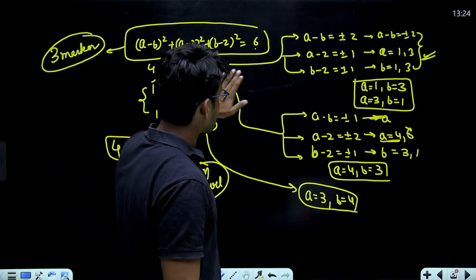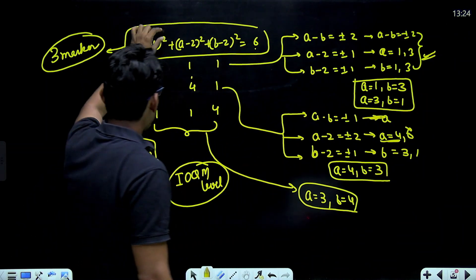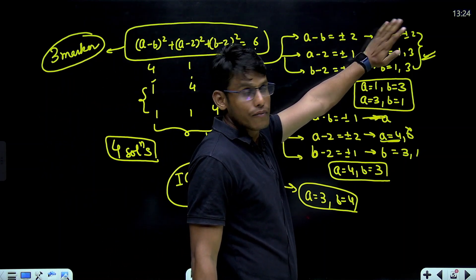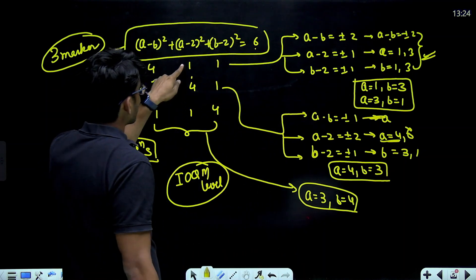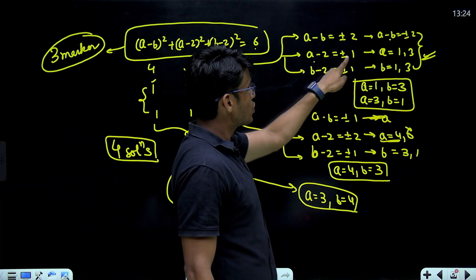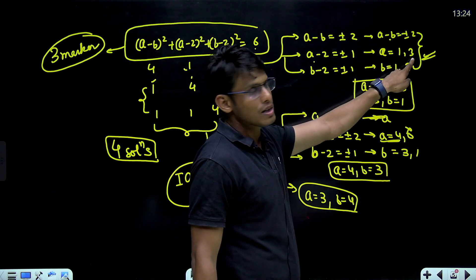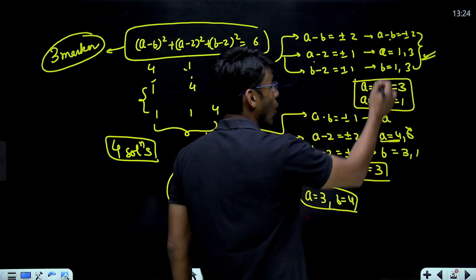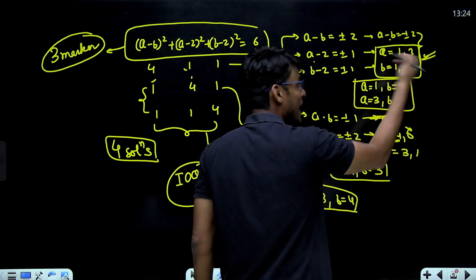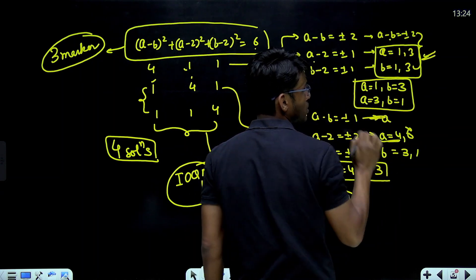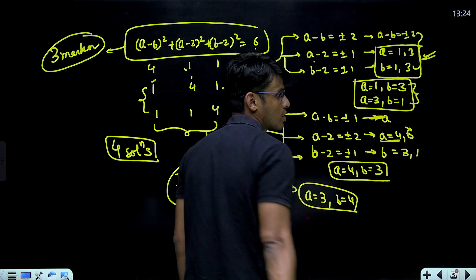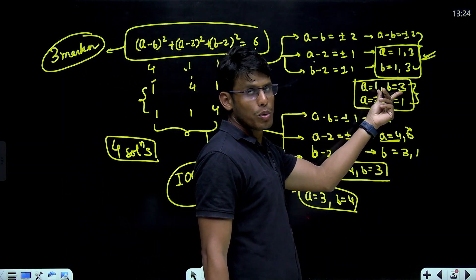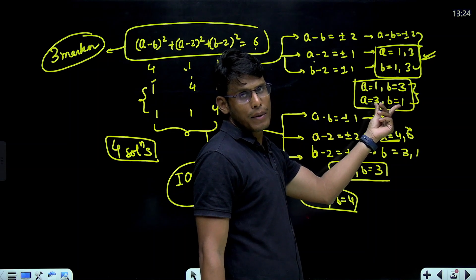In the first situation, a minus b whole square equal to 4. The solution comes out to be a minus b equal to plus minus 2. Now, we are not going to solve this. The second one is beautiful. a minus 2 whole square is 1, which means a minus 2 is plus minus 1. This gives a equals plus 1 and 3. b minus 2 whole square is plus minus 1 means b is also equal to 1 and 3. Now, in all these solutions, you have to make sure that a minus b should give us plus minus 2. So, these are the two solutions. From first condition, a equals 1, b equals 3. Because a minus b is coming out to be minus 2. a equals 3, b equal to 1. a minus b coming out to be 2.